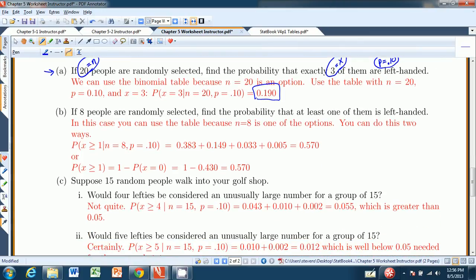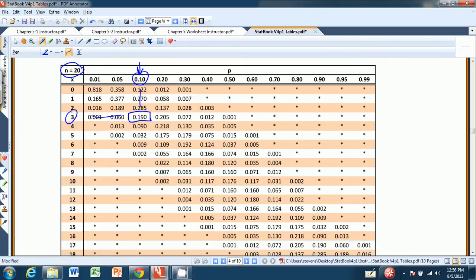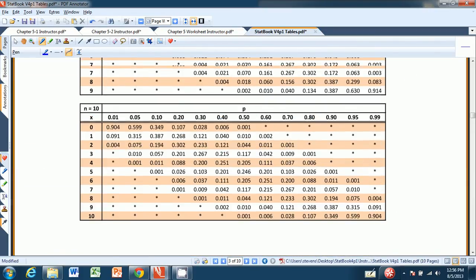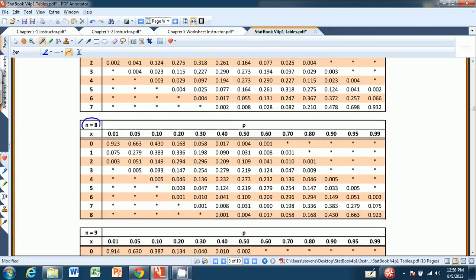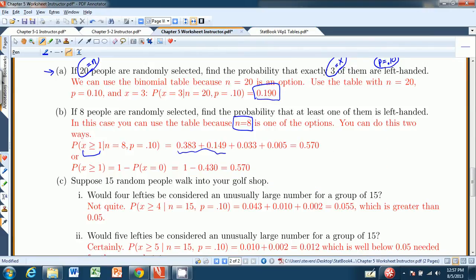If eight people are randomly selected, find the probability at least one of them is left handed. So we need to go to N equals 8. And I'm looking for the probability that X is greater than or equal to 1. So I'm going to scroll all the way back here. 15, 10, 9, 8. There we go. N equals 8. P, the probability of a single lefty, is still 0.10. So at least one means one or more. So it's the sum of these probabilities. So I'm adding all these probabilities up where I count the stars as zero. But notice, at least one is everything except zero. So I could also just take the .43 and subtract that from one. That should give me the same answer. Because these things all add up to one, one way or the other.